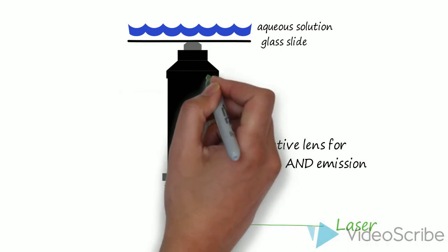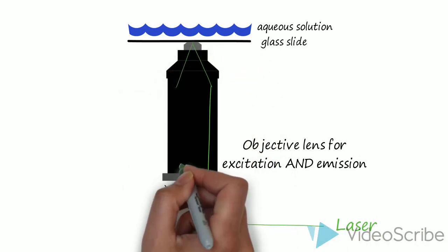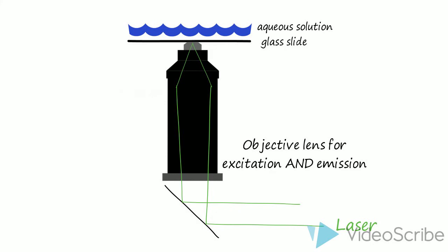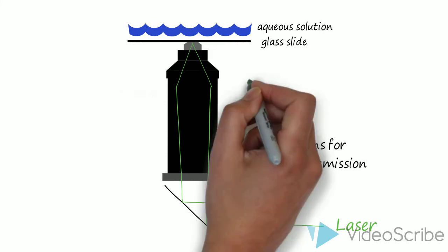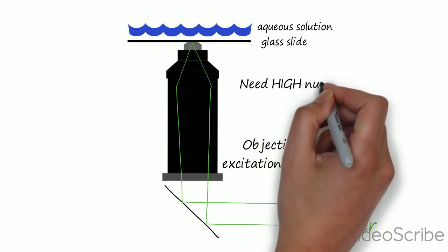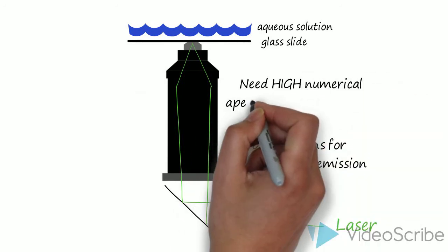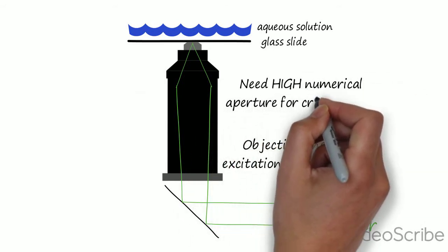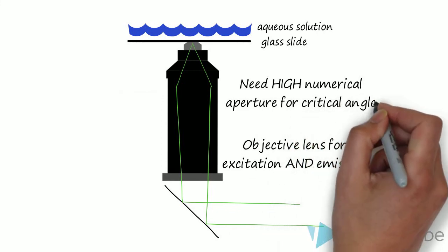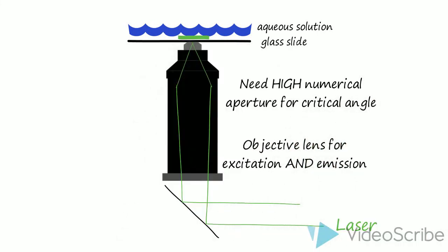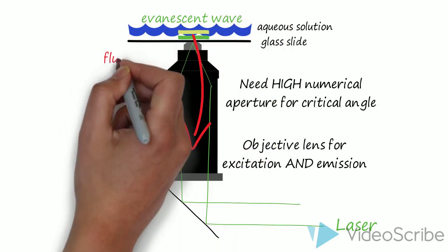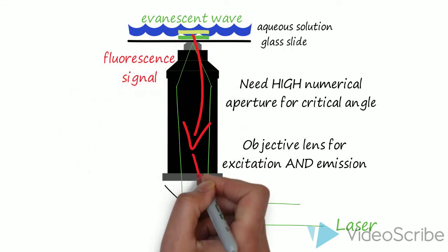Excitation light enters the objective lens off-center so that it can be sent at an angle to hit the glass-water interface. Because the critical angle of glass and water must be exceeded, O-TIRF only works if the lens has a high numerical aperture of at least 1.34.